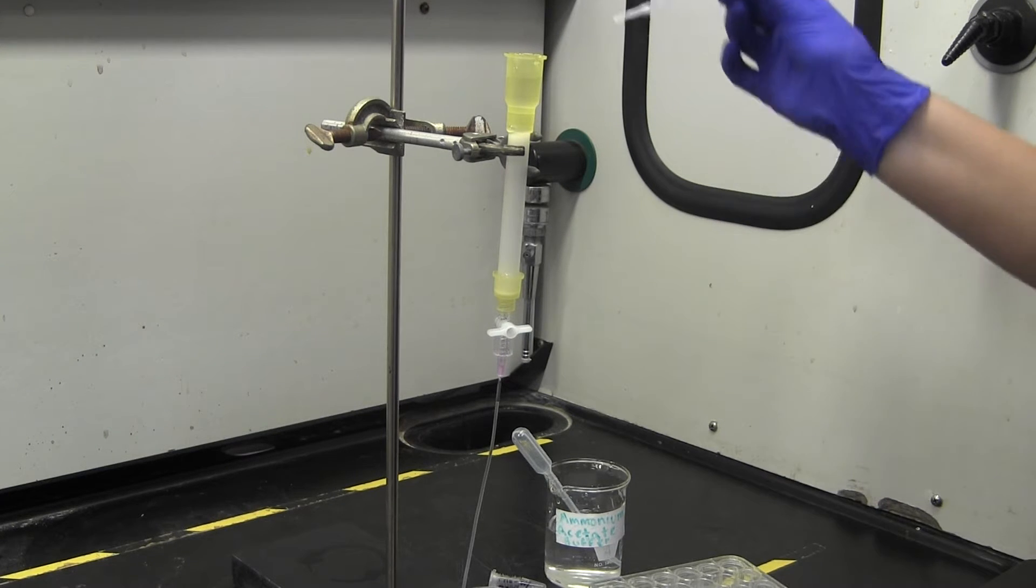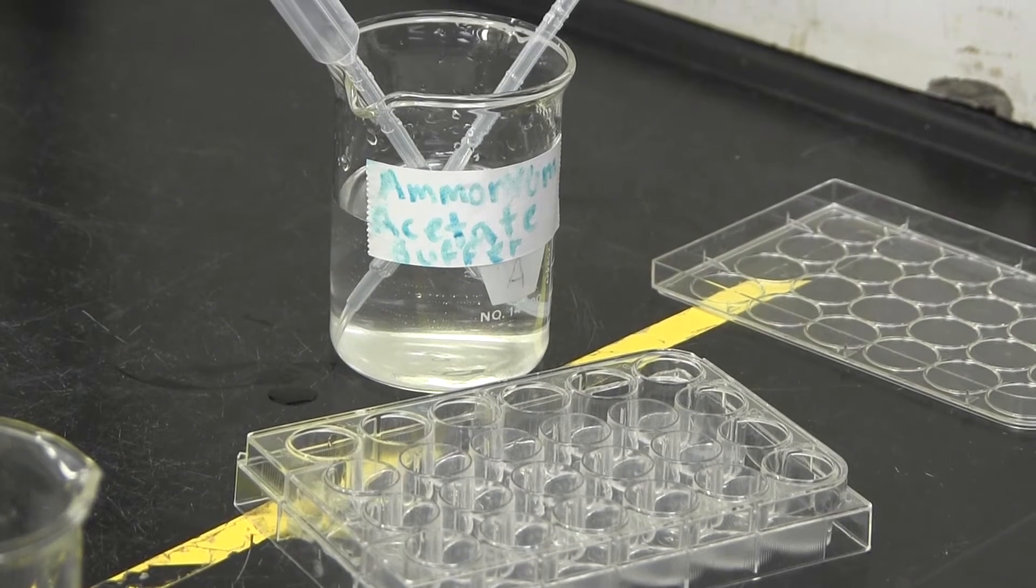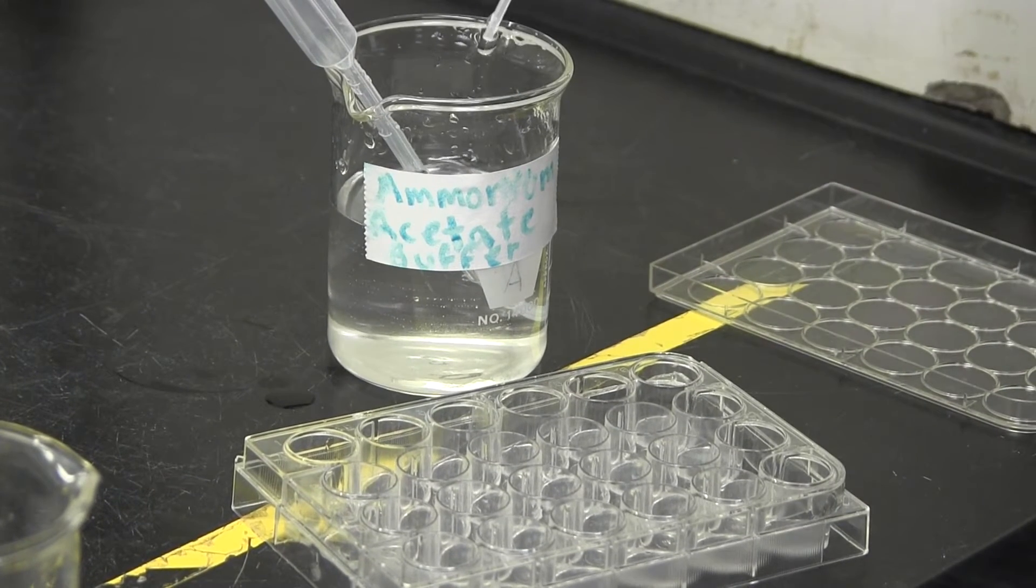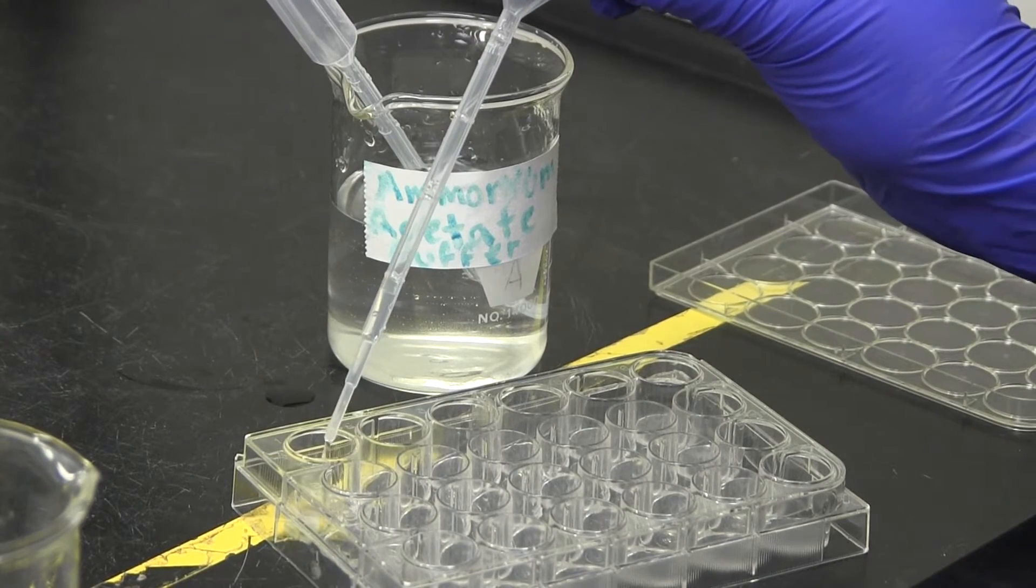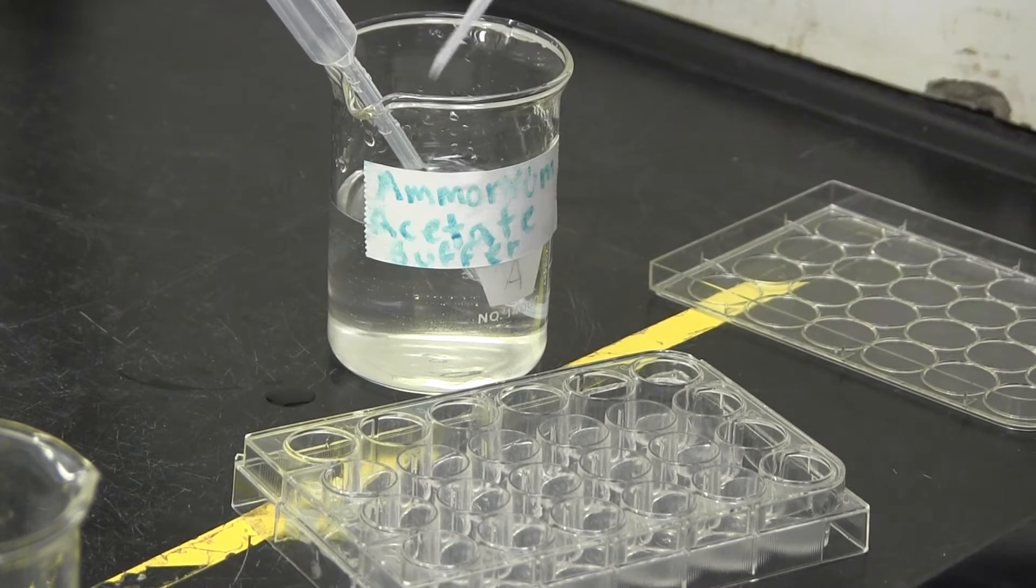While this is running, prepare your well plate. You will be collecting fractions in about 0.8 milliliter parts and it will help to put a pre-measured amount of liquid in the first well. This will help you judge the size of the fractions to collect.